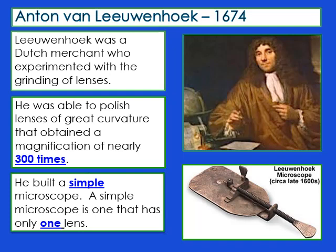A couple of years later, Anton van Leeuwenhoek — also Dutch — was a merchant who experimented with grinding lenses. He polished the lenses and gave them a curve, and because of that he was able to obtain a magnification of nearly 300 times. He built a very simple microscope with only one lens. It was very small — you held it in your hand and looked through it to see objects 300 times bigger than with the naked eye.